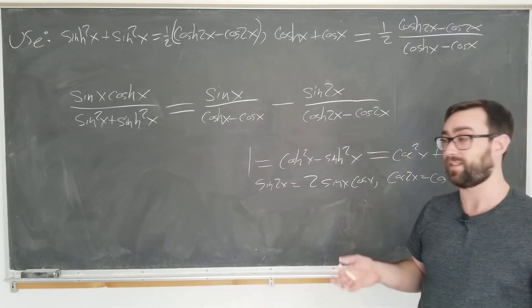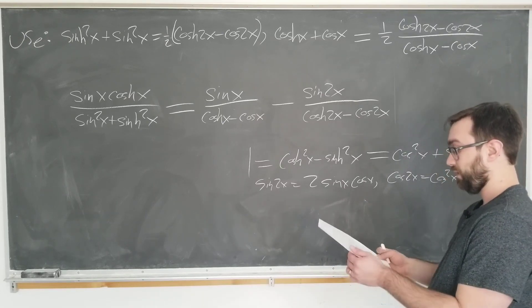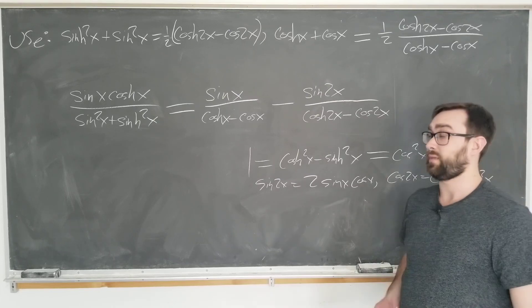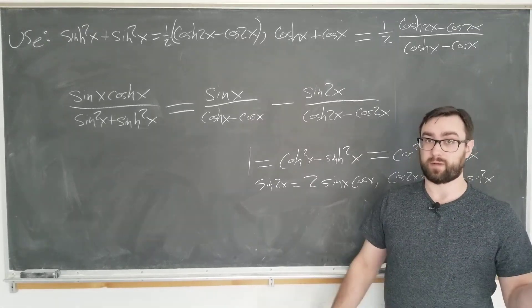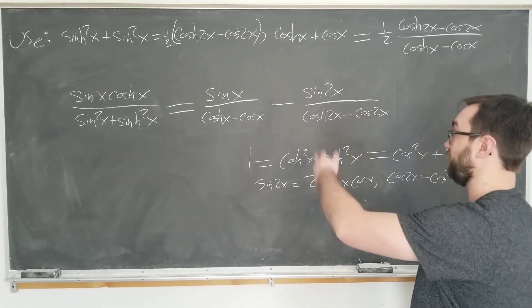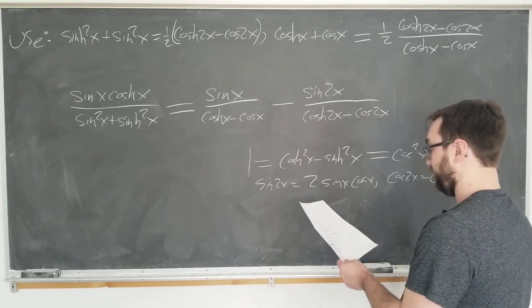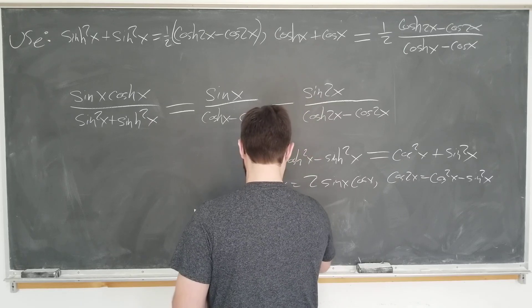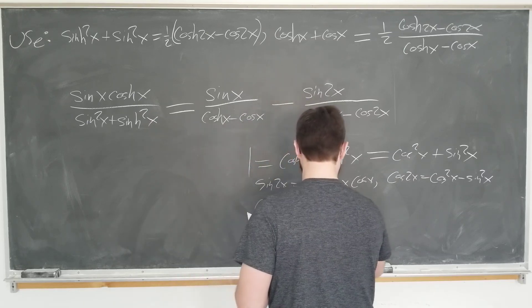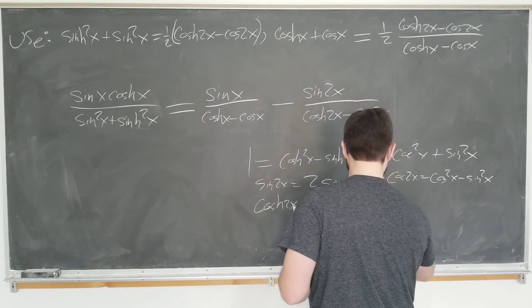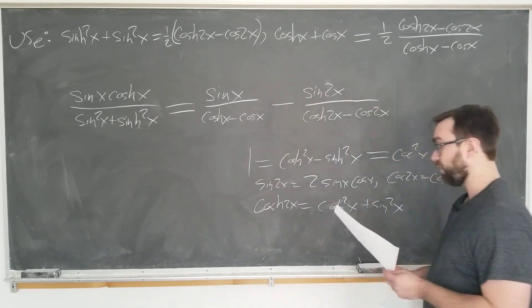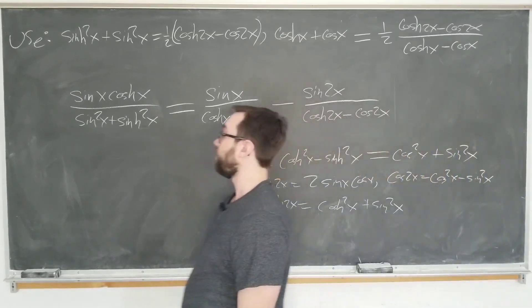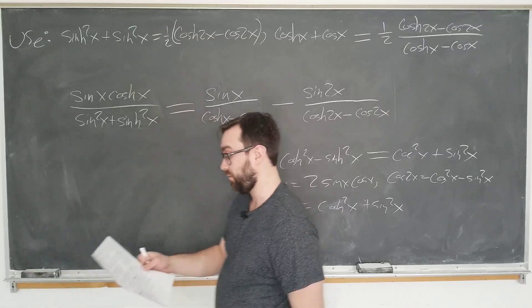And this is also equal to cosh squared x minus sin squared x plus sinh squared x. You would need the double-angle formula, so you need to know that sin 2x is equal to 2 sin x cos x. Sorry, I'm writing them easily because we're not going to use them. And cos 2x is equal to cos squared x minus sin squared x. Even writing down all the identities that you need takes a lot of time. I mean, god, it's just so tedious.